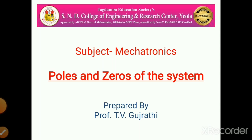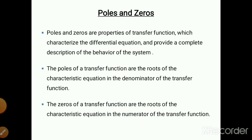So what are poles and zeros? The poles and zeros are properties of a transfer function which characterize the differential equation and provide a complete description of the behavior of the system. So if we want to find out the behavior of a system — whether the system is stable or unstable — we go for poles and zeros.